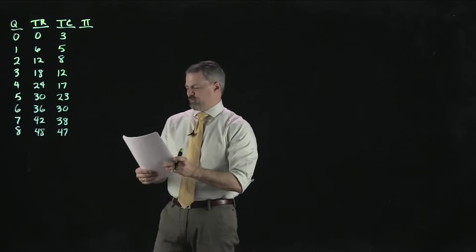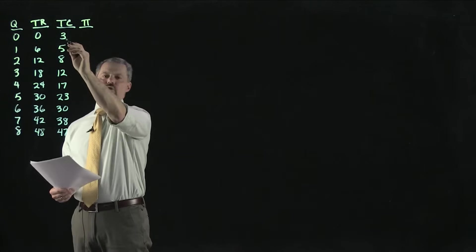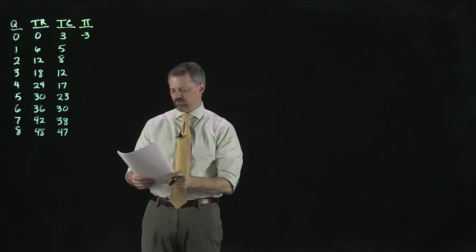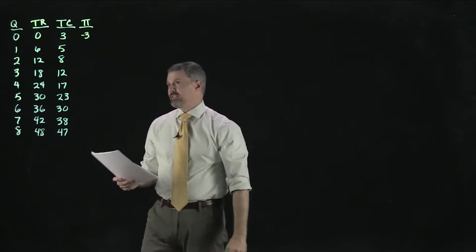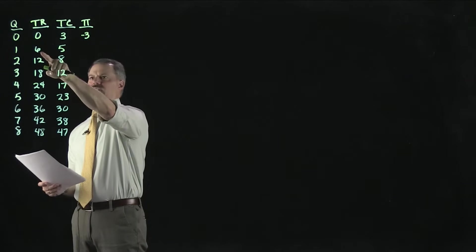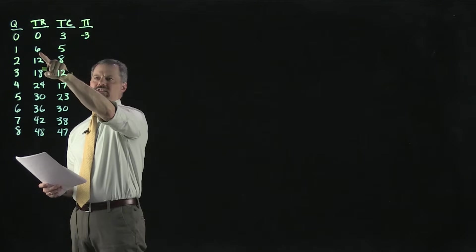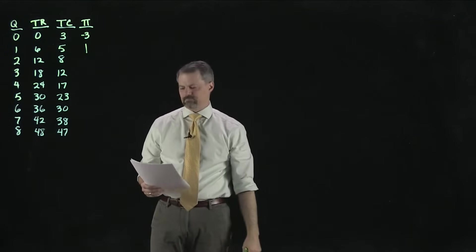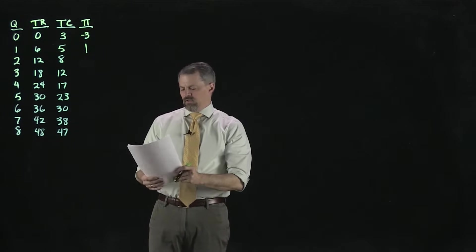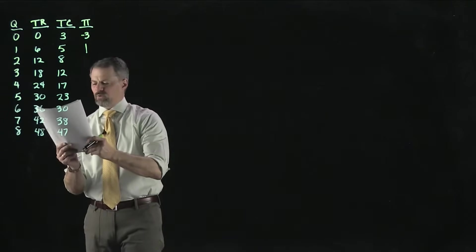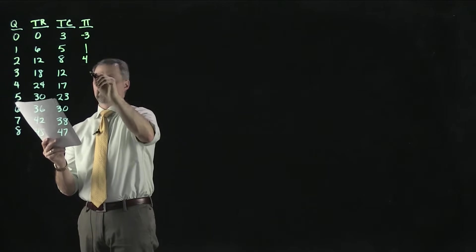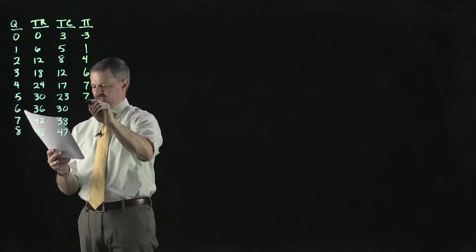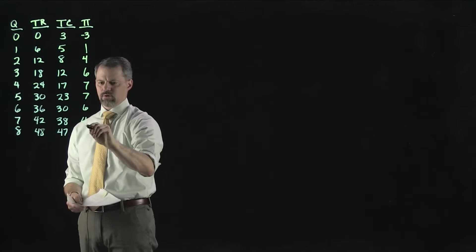If the firm produces no milk, they have no revenue but incur $3 of cost, so profit is negative $3. If they produce one gallon, they sell it for $6 and incur $5 of cost, so profit is $1. The rest of the profit column looks like: $4, $6, $7, $7, $6, $4, $1.